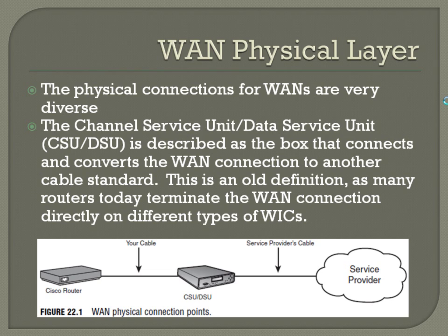Moving on to the WAN physical layer — the physical connections for WAN are very diverse. The channel service unit/data service unit, or CSU/DSU, is described as the box that connects and converts the WAN connection to another cable standard. Many routers now terminate the WAN connection directly on different types of WICs. For instance, with a dedicated line, you've got your T1 line coming in, terminating on the CSU/DSU, and then the CSU/DSU changes the cable type and connects directly to your Cisco router. Most of the time now, the CSU/DSU and the Cisco router are combined into one unit, or the CSU/DSU is a WIC card you can swap in and out, so it terminates directly on your equipment rather than having an additional point of failure.